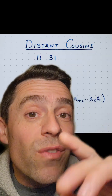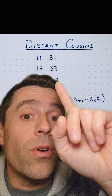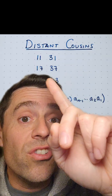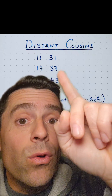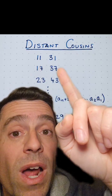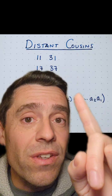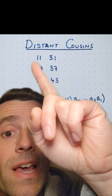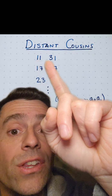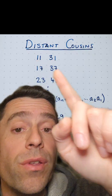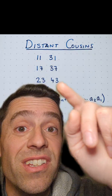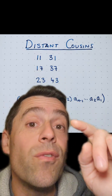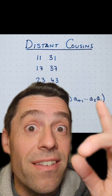And now I'm ready to define my new kind of prime, which I'm going to call distant cousins or distant cousin primes. Those are going to be 2 primes such that the most significant digit differs by 2. So for example, in 11, take that leading 1, add 2, you get 31. Those are 2 primes, so these are distant cousins — 17 and 37, 23 and 43, etc.